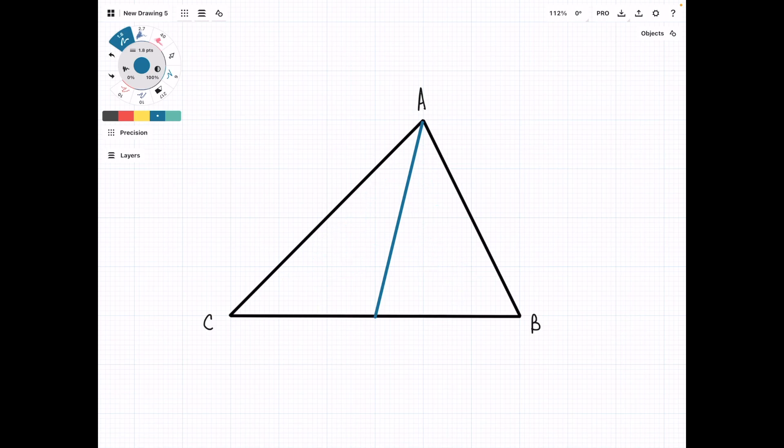When we extend a median from each of the vertices in the triangle, we'll notice that they all cross at a central point, and this point is known as the centroid.